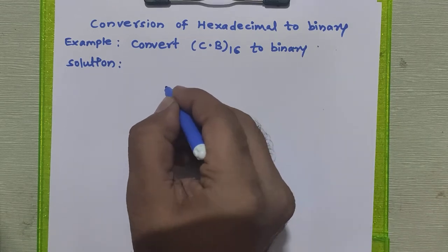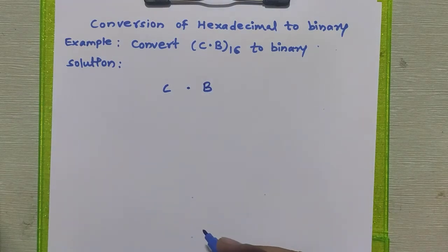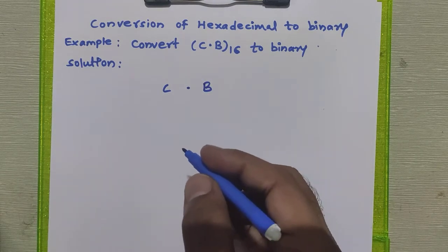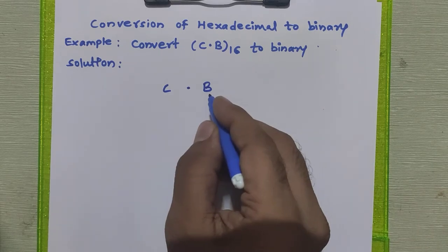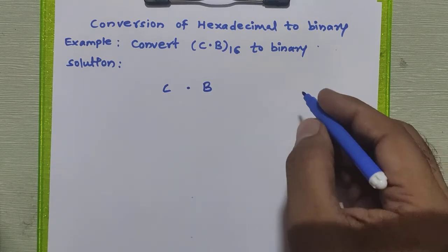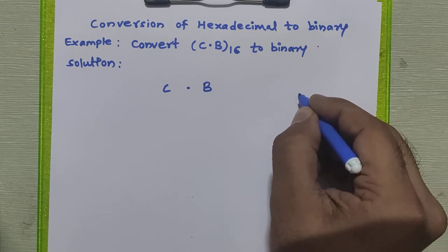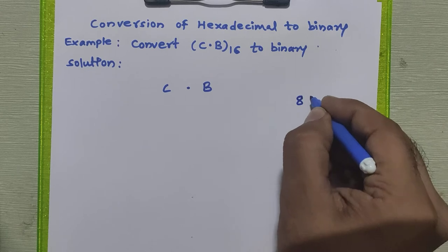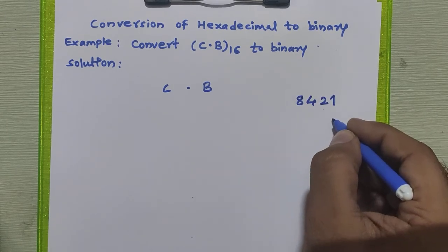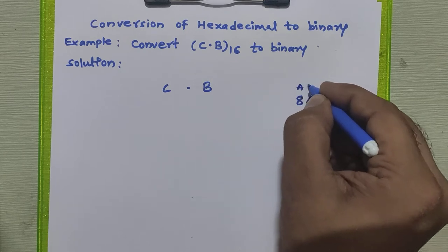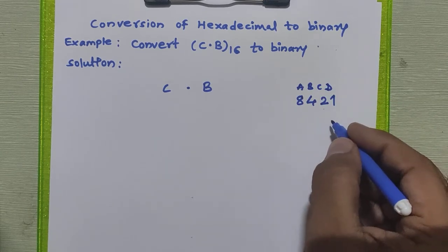To convert any hexadecimal number to binary, we are going to write 4-bit binary equivalent for this hexadecimal number. Now how to get the 4-digit binary number equivalent for this? We are going to use this number system 8-4-2-1. How we obtain this number system is because there are 4 bits ABCD in this hexadecimal set.